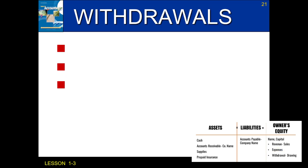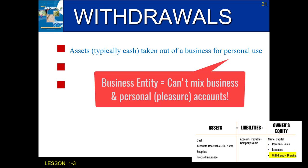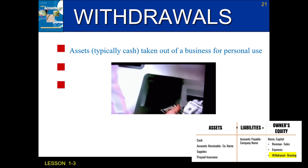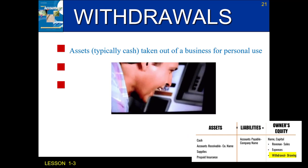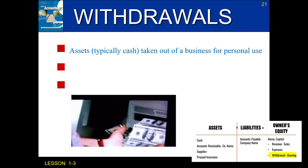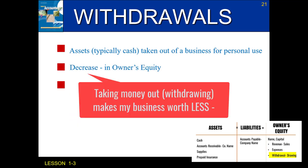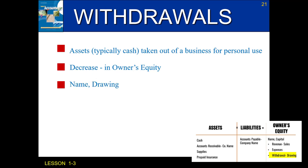The last type of owner's equity change is a withdrawal — when the owner takes an asset, typically cash, out of the business for personal use. This is required because of the business entity concept: we can't mix business and personal finances. Think of it like going to an ATM to withdraw cash. When we withdraw from our business, it causes a decrease in owner's equity. The account title for withdrawals is 'name of the owner, comma, drawing.'